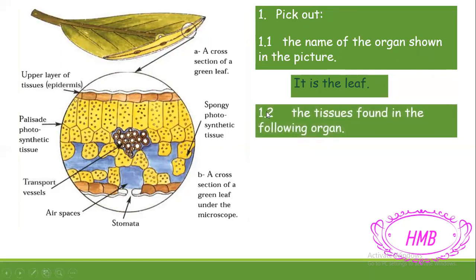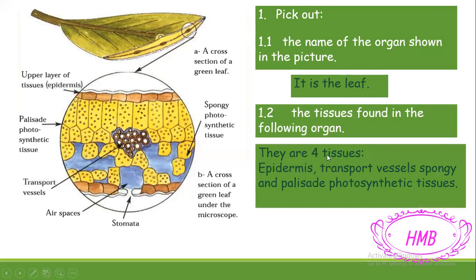Number two: pick out the tissues found in the following organ. I have the organ, which is the green leaf studied under the microscope. Since it's an organ, it is made up of many tissues. If we look at the picture, we can see the names of these tissues. There are four tissues.